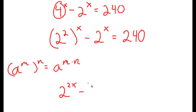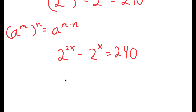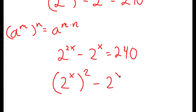So I have 2 to the power of 2x minus 2 to the power of x is equal to 240. I can rewrite 2 to the power of 2x as 2 to the power of x, all squared. So I get 2 to the power of x, quantity squared, minus 2 to the power of x is equal to 240.